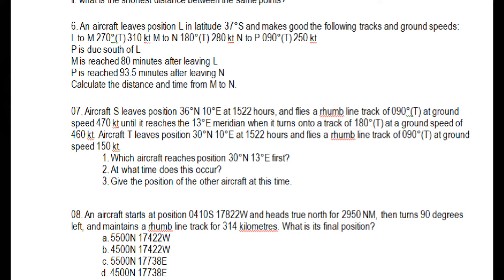Aircraft S leaves position 36° North, 10° East at 15:22 hours and flies a rhumb line track of 090° True at a ground speed of 470 knots until it reaches the 13° East meridian, when it turns onto a track of 180° True at a ground speed of 460 knots. Aircraft T leaves position 30° North, 10° East at 15:22 hours — same time as Aircraft S — and flies a rhumb line track of 090° True at a ground speed of 150 knots.